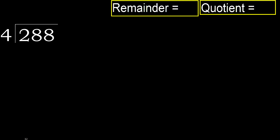288 divided by 4. 2 is less than 4, therefore next. 28 is not less, therefore we work with 28.